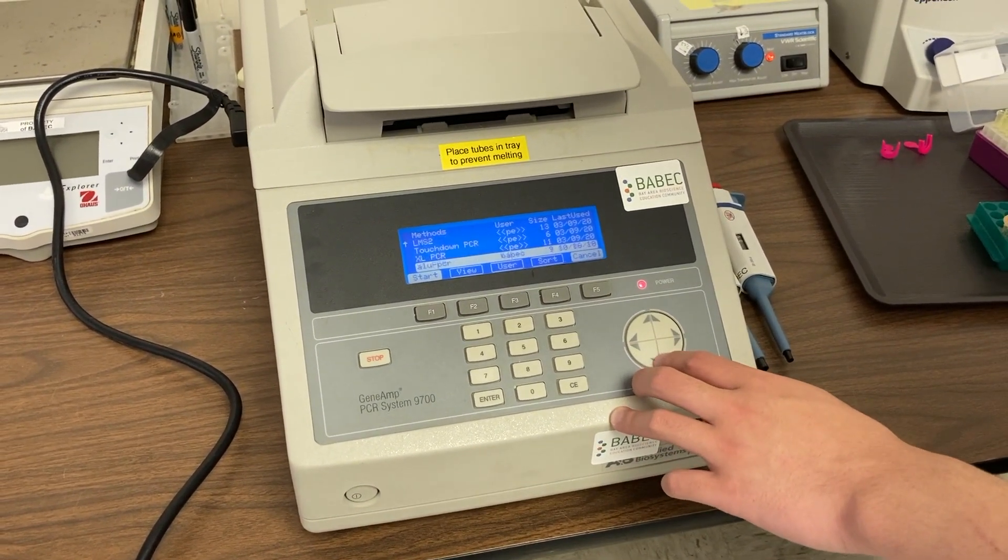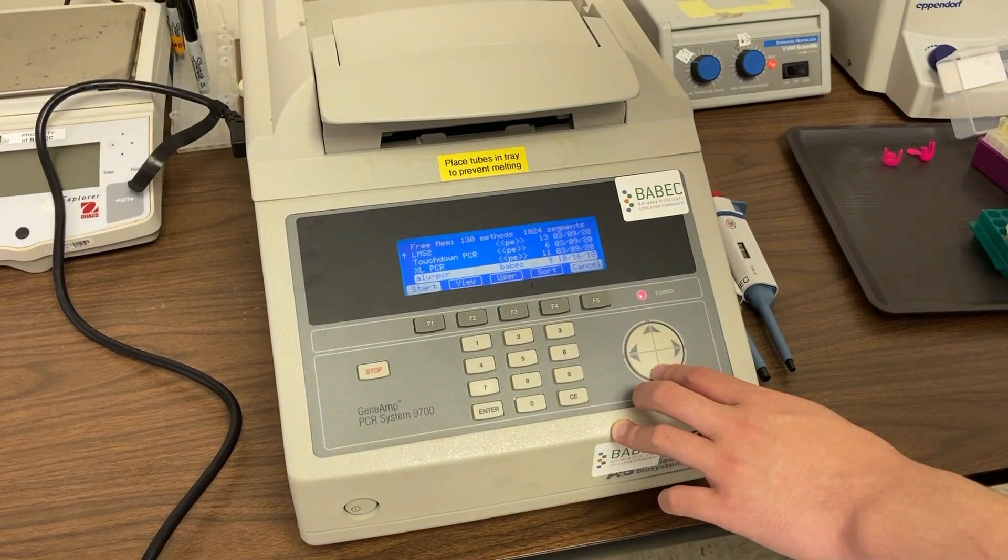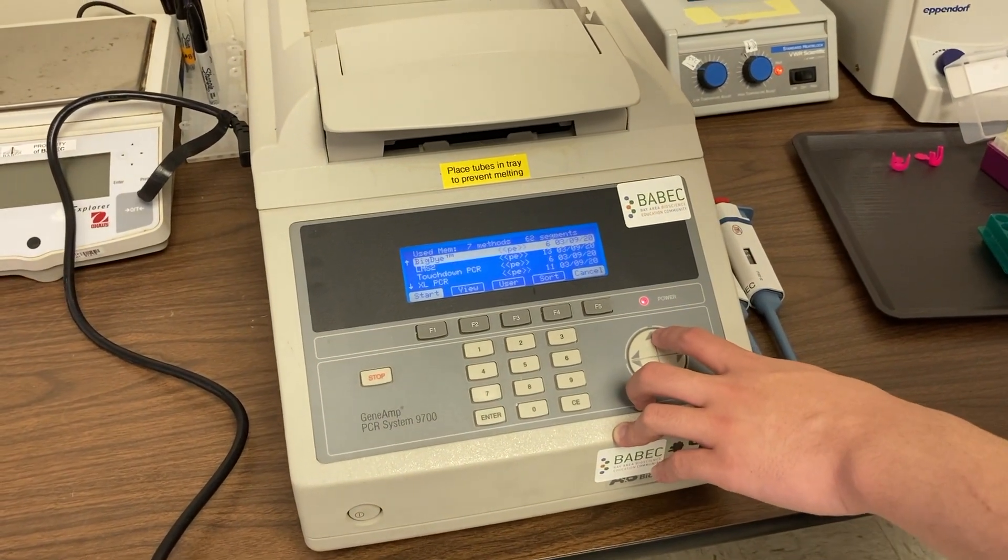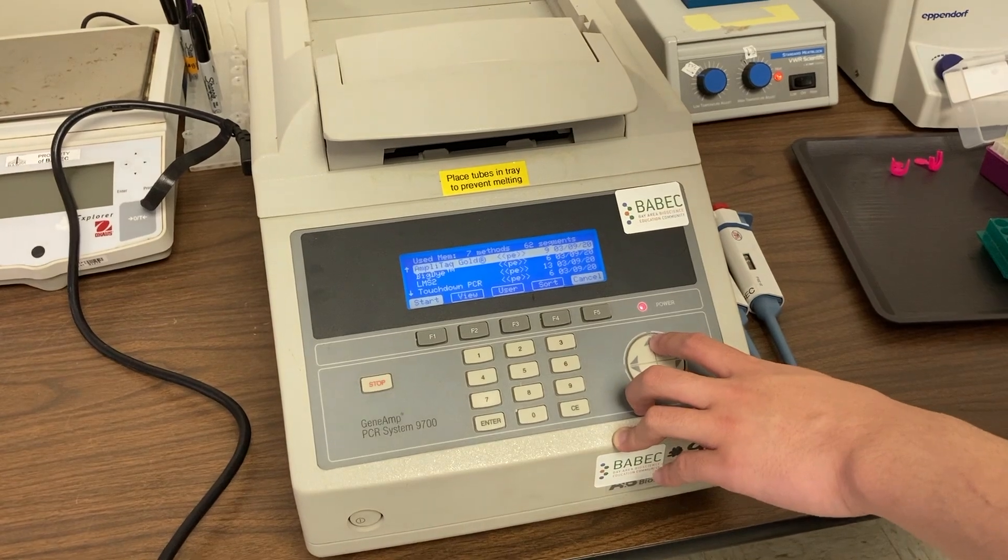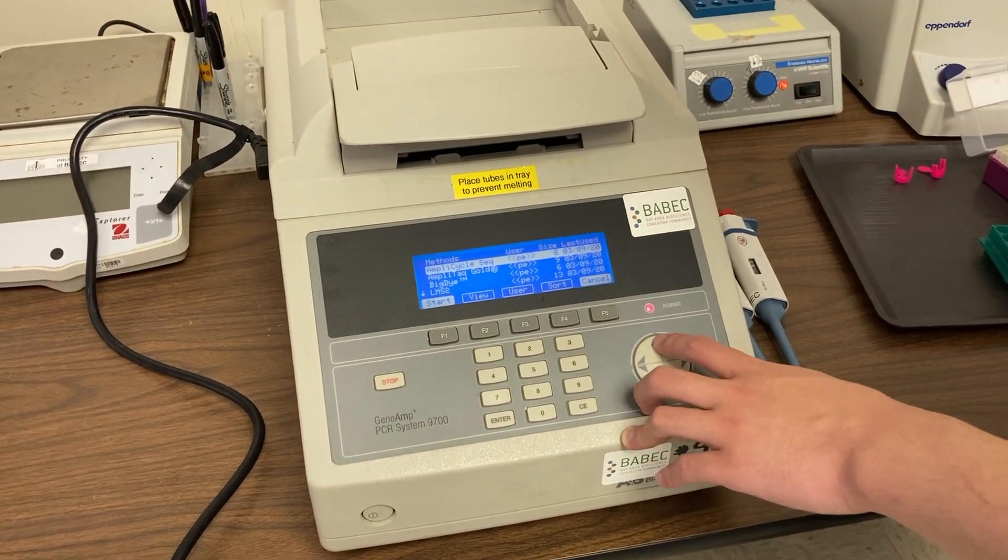Typically, we set the machine to do around 30 cycles of these specific increases and decreases. If everything works well, the TAC polymerase will make millions of copies of our target DNA.